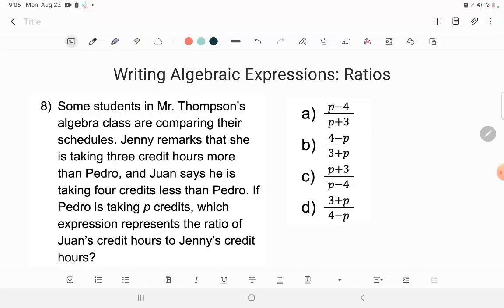Like I always do when we first hit up a word problem, I've got to ask myself the question, what are they asking me to do or to find? So let's head straight to that question down at the bottom. It said, if Pedro is taking P credits, that's more information. There we go. Which expression, found my question word, which expression, so they're asking me to write an expression represents the ratio of Juan's credit hours to Jenny's credit hours.